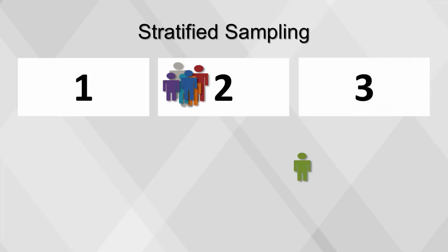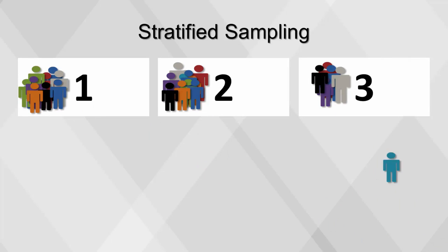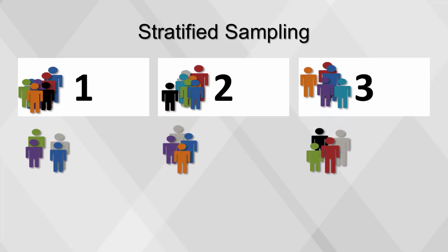But suppose various subpopulations within the total population can be identified. These populations are called strata. Instead of taking a random sample from the entire population, we might get better information by selecting a simple random sample from each stratum separately. This is called stratified sampling.